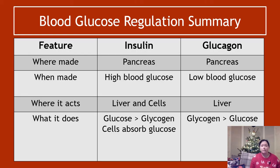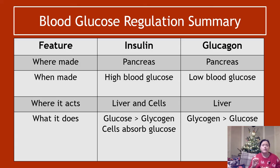To summarize the features: both insulin and glucagon are made in the pancreas. Insulin is made when blood glucose is high; glucagon is made when blood glucose is low. Insulin acts on both the liver and all body cells; glucagon only binds to the liver. Insulin converts glucose to glycogen inside liver cells and allows cells to absorb glucose. Glucagon does the opposite — converts glycogen to glucose.